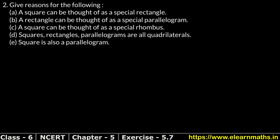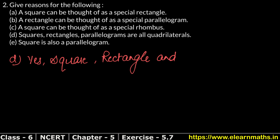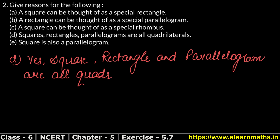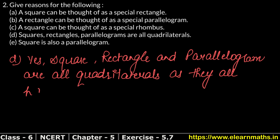D part: square, rectangle, and parallelogram are all quadrilaterals. Quadrilaterals have four sides. Square, rectangle, and parallelogram all have four sides. So yes, all of them are quadrilaterals since they all have four sides.